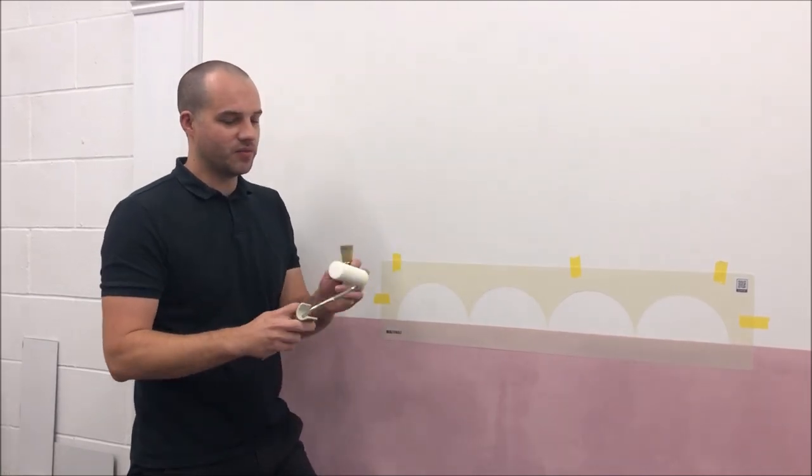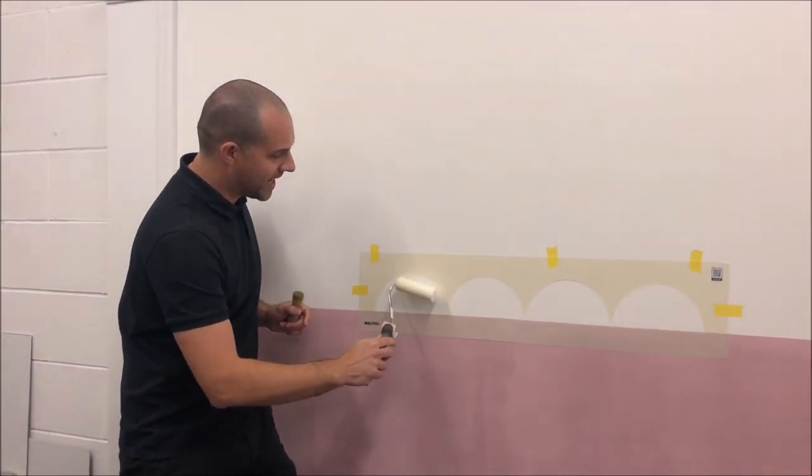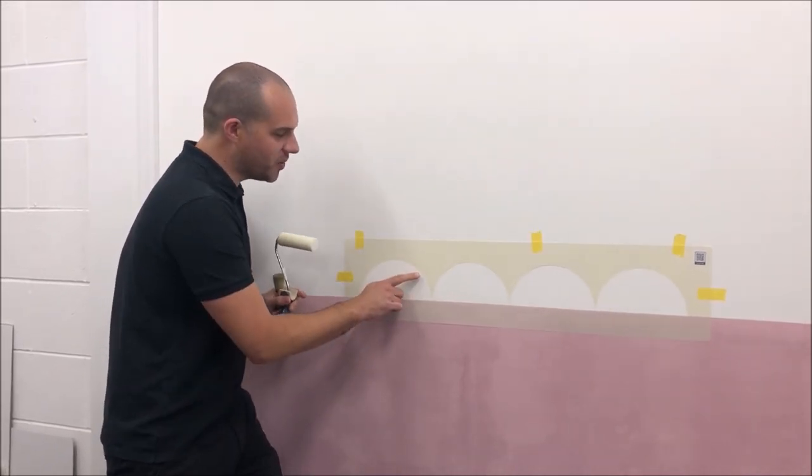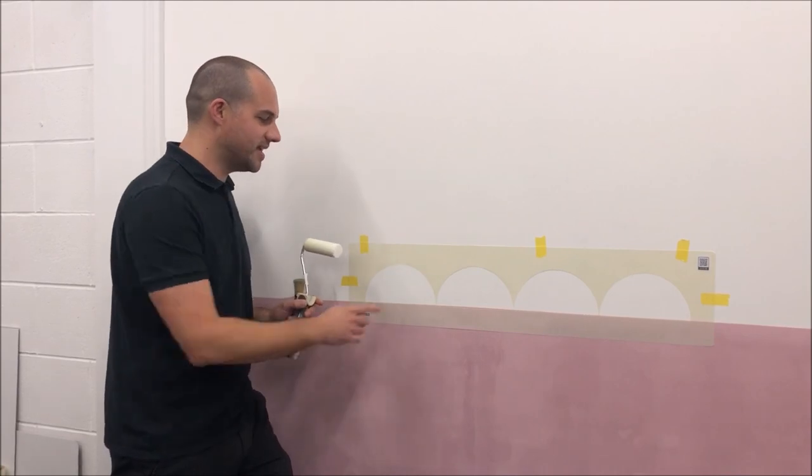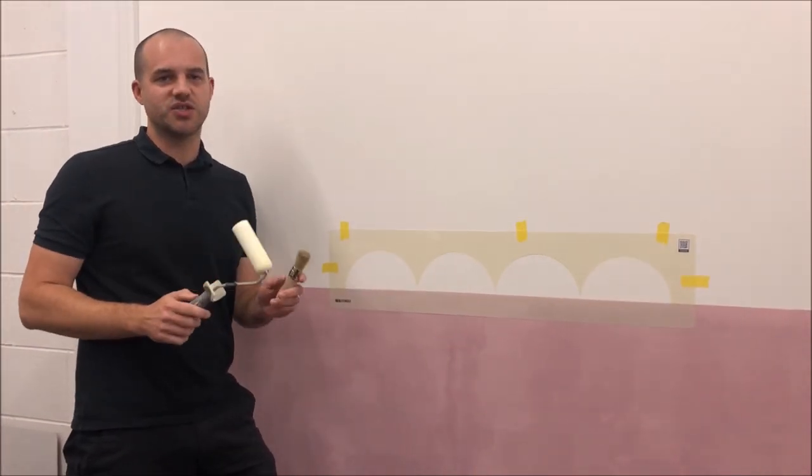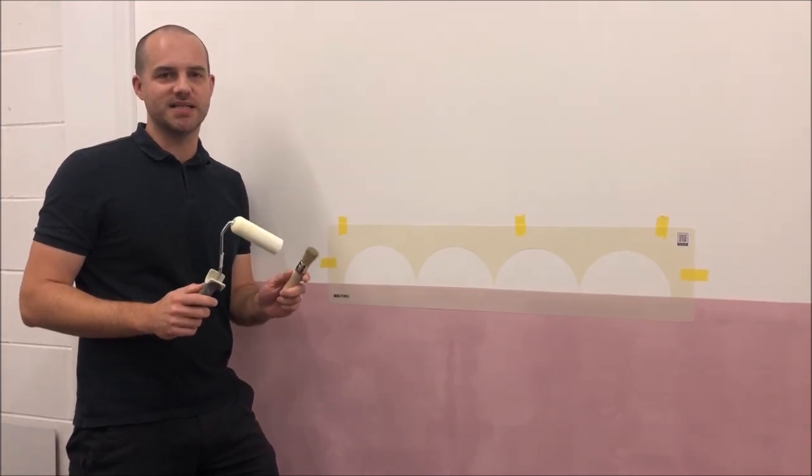Similarly, if you can, with a roller, roll down into the shapes rather than like this against the edge, because there's always a chance that you might push paint underneath the plastic and get blotchy edges. So those are two very good tips for getting a nice crisp line when stenciling.